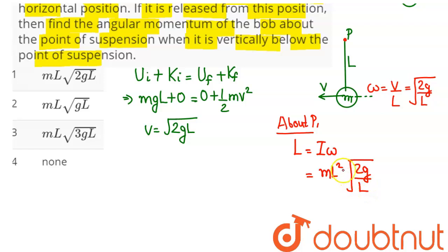So this gives us on simplification, this comes out to be m into L into square root of, we have here as root under 2gL. Which we can see option number one is the correct answer. Hence we can say one is our answer.